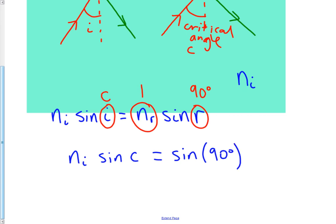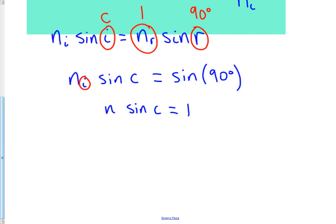If you put that into your calculator in the right mode, you'll find that sin of 90 degrees is 1. If we drop the I and just call N the refractive index of the medium we're travelling from, this becomes N sin C equals 1, which may or may not be the formula you see on the formula sheet. The formula you see on the formula sheet will be sin C equals 1 over N.